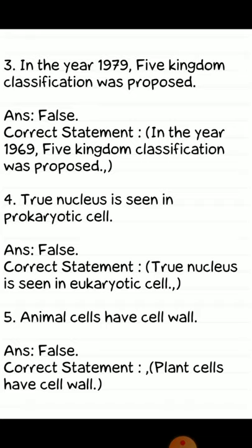Third: in the year 1979, five kingdom classification was proposed. Answer: false. Correct statement — in the year 1969, five kingdom classification was proposed. Fourth: true nucleus is seen in prokaryotic cells. Answer: false. Correct statement — true nucleus is seen in eukaryotic cells.